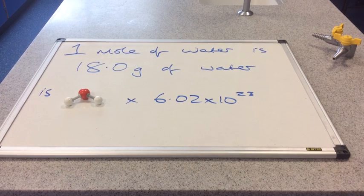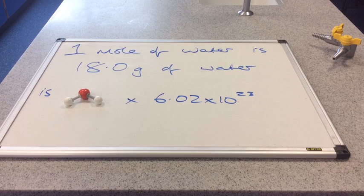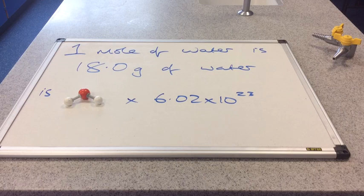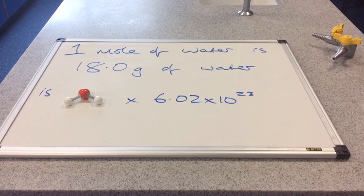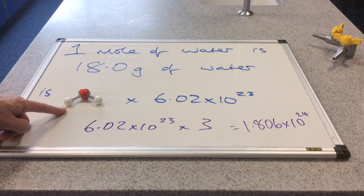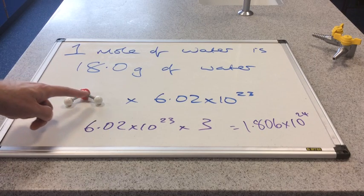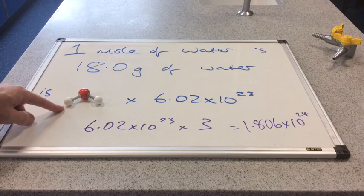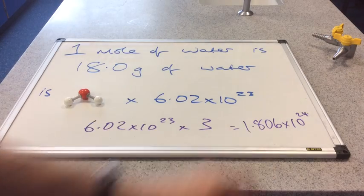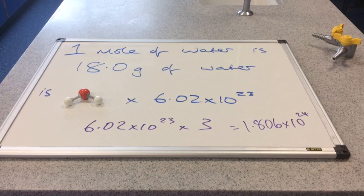Now sometimes in exams they sort of crank up their difficulty levels by then going on and asking how many atoms are in a mole of water. So if you just have a look at the information that's on the board now and see if you can work out how you would do that. So obviously if we've got Avogadro's number of these, there are three atoms in each of those. So we just simply multiply Avogadro's number by three and that gives us that number of atoms.